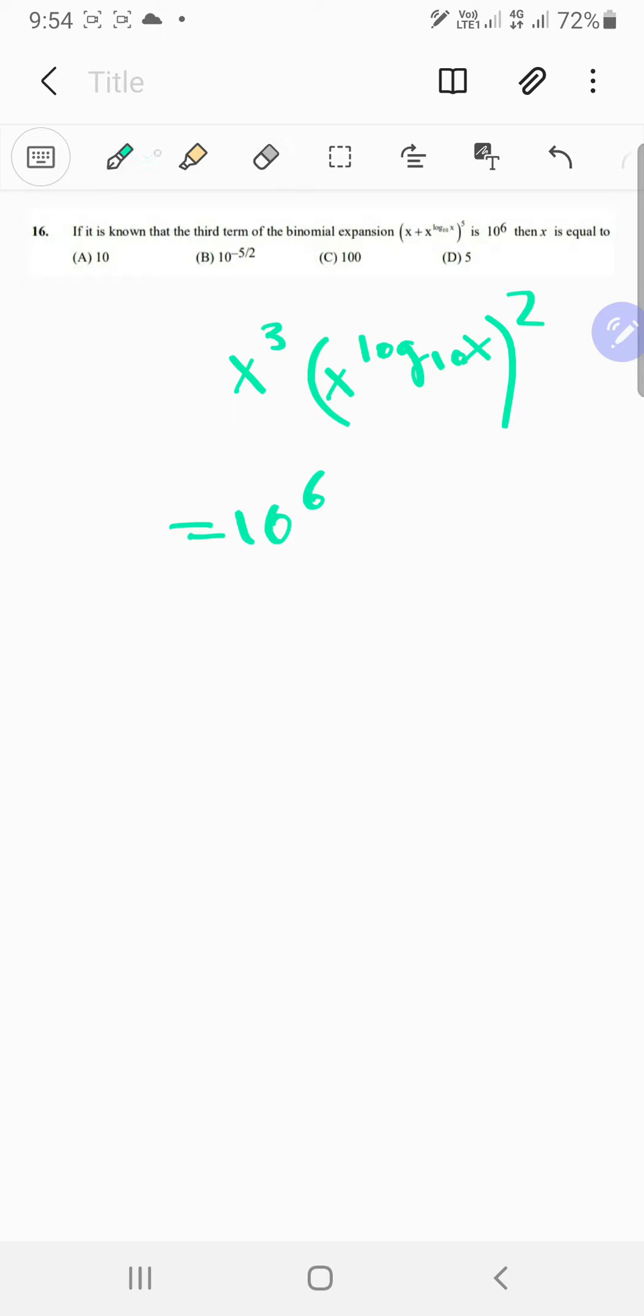What's 5 choose 2? First of all, 5 choose 2 is 10, so that's nice—you just get 10^5. So you get x cubed times x^(2 log₁₀ x) equals 10^5.